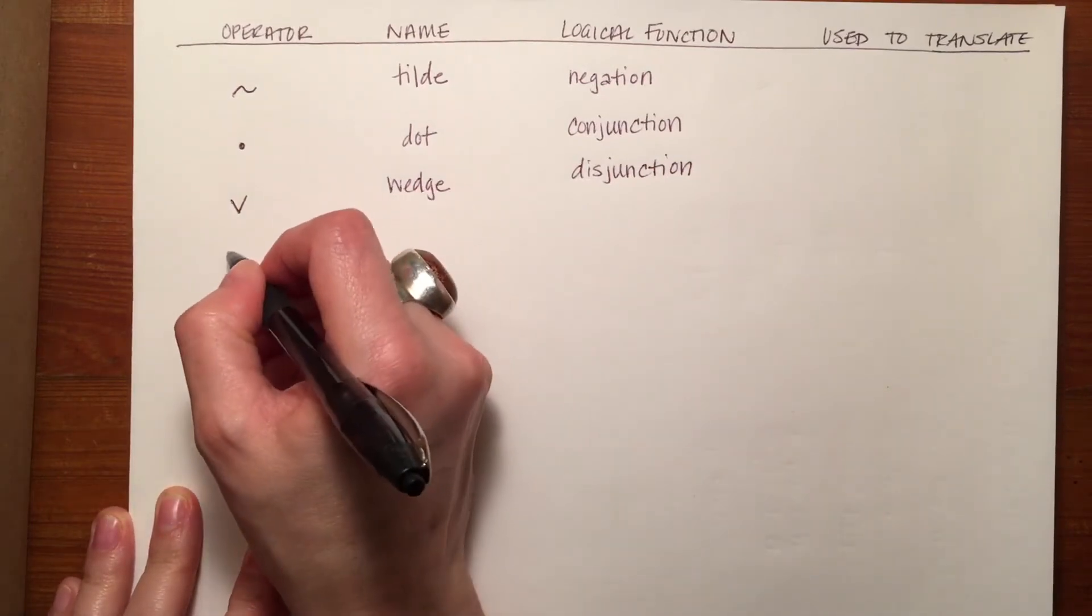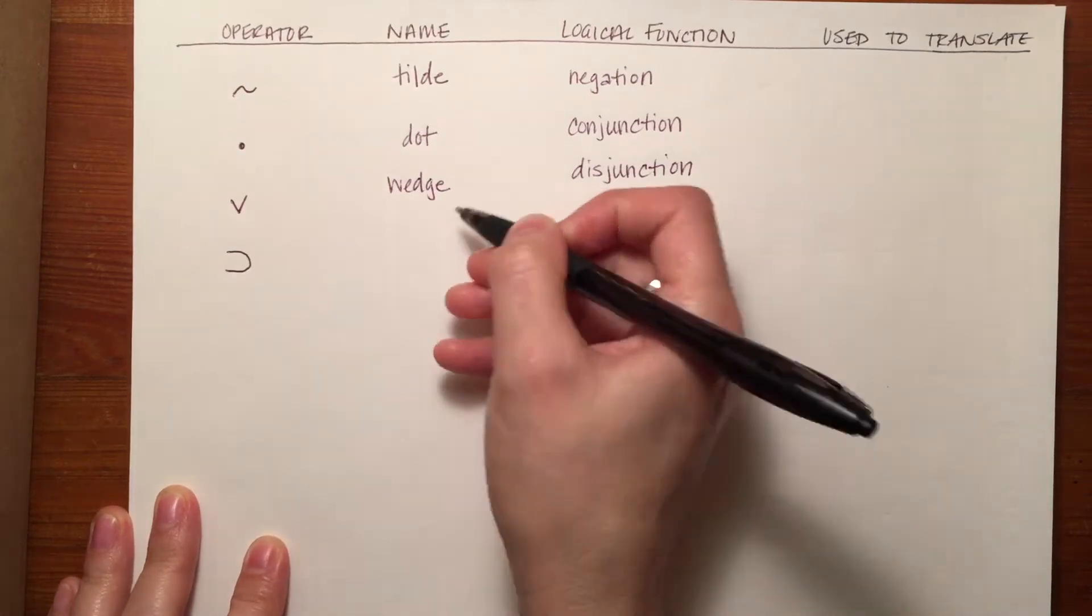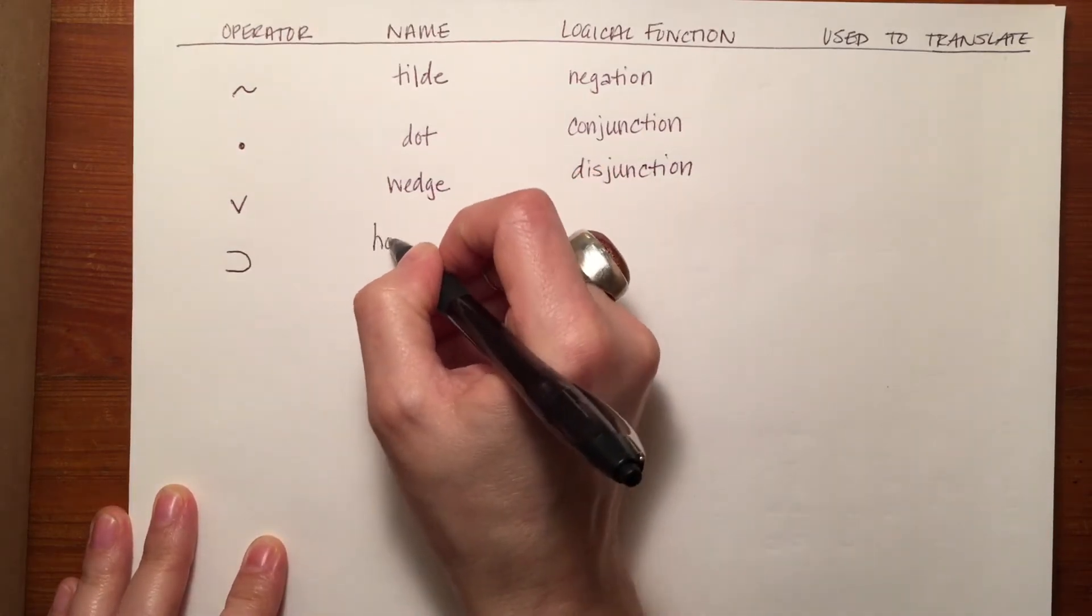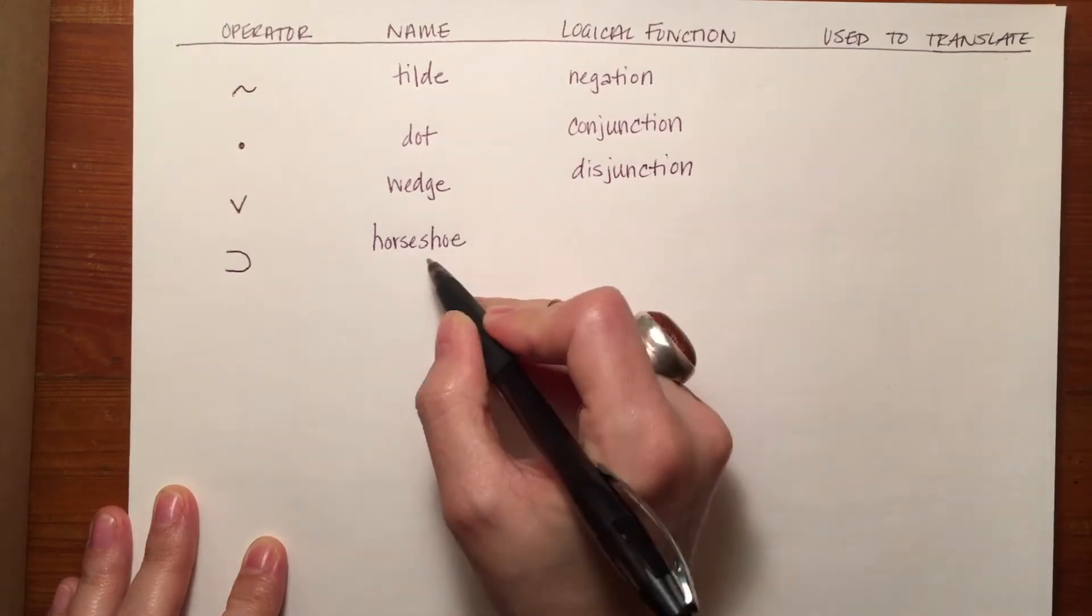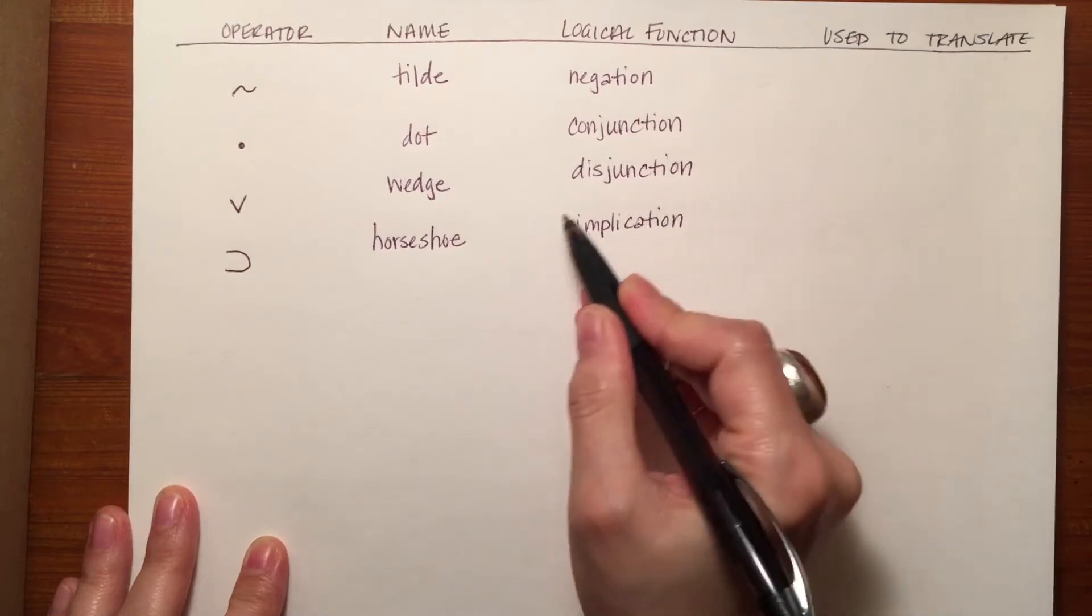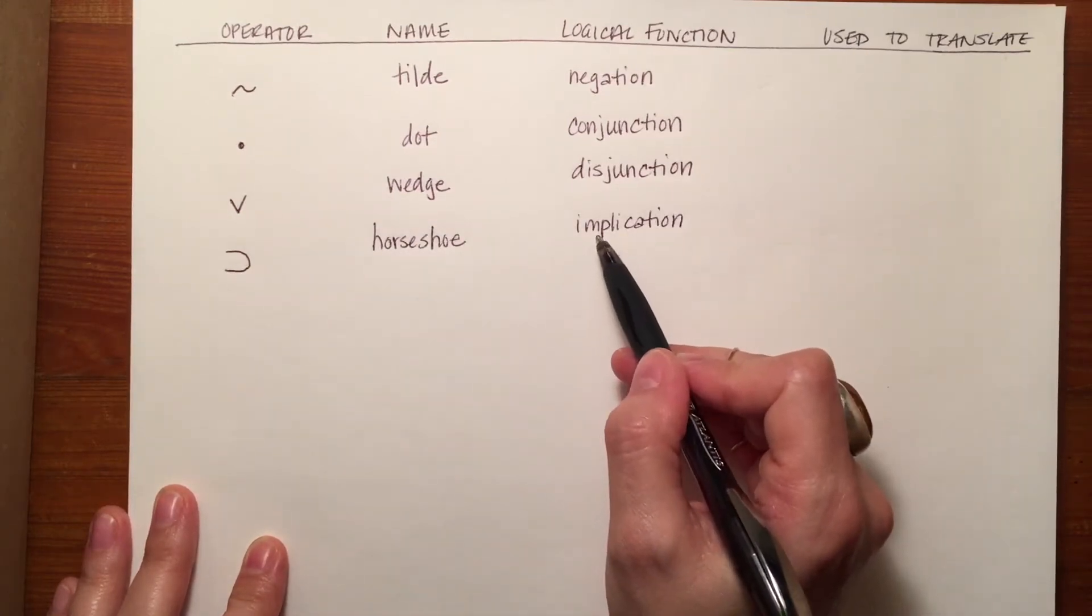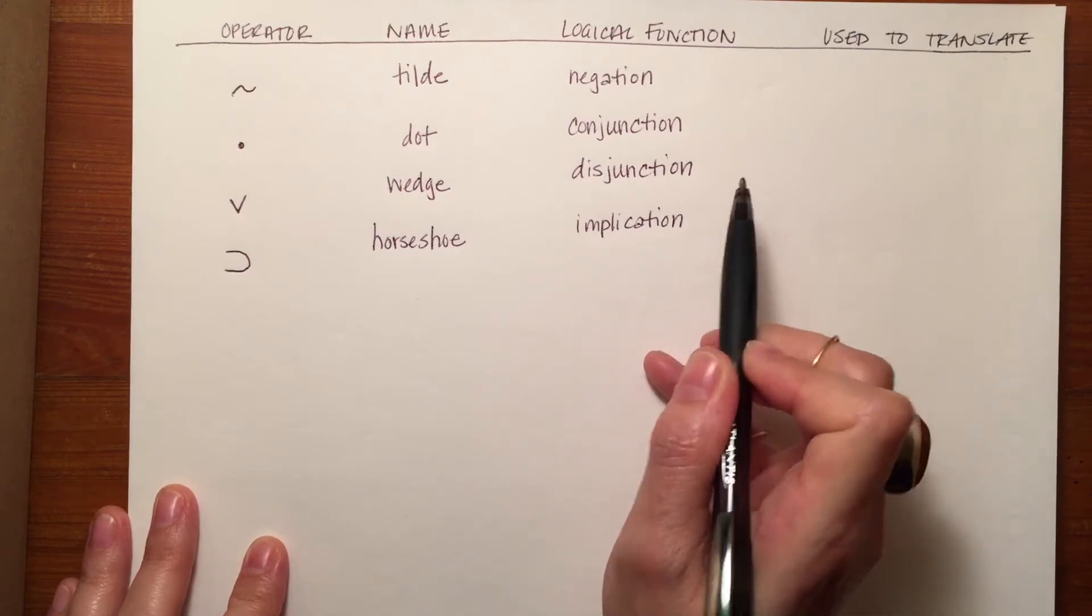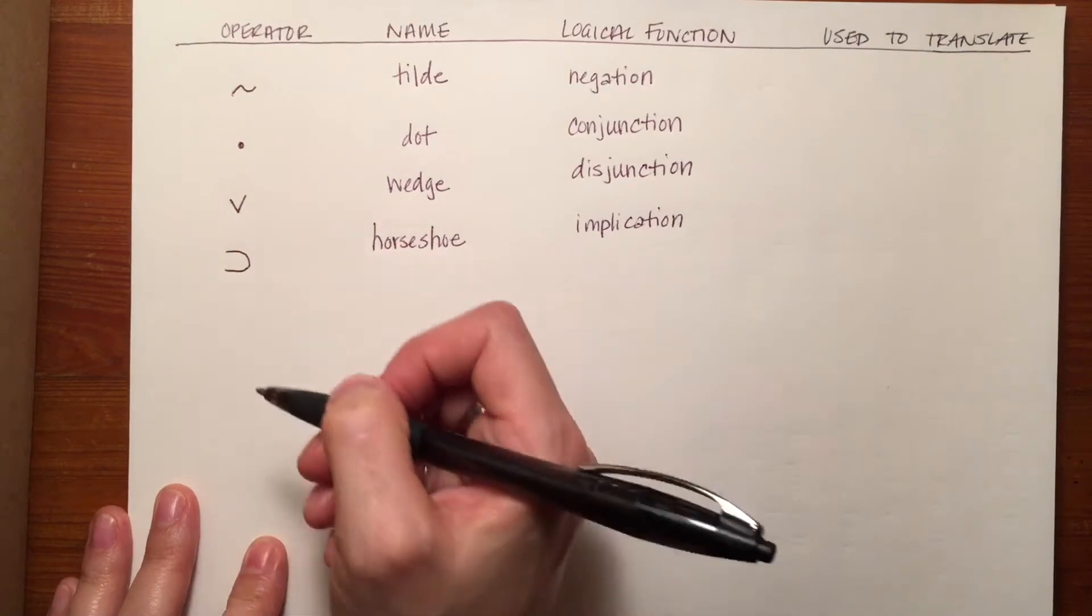The fourth symbol is a sort of sideways u that's called the horseshoe. Its logical function is something called implication. So the first part of a statement like this with this operator, we would say something like A implies B. There's a relationship of dependence there that we'll discuss more in the future.